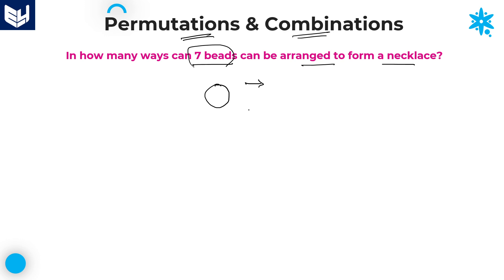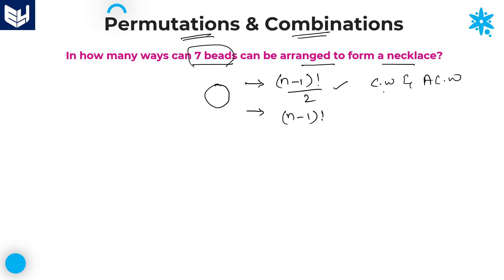In circular arrangement, we have two formulas. One is related to necklace and garland — that is (n minus 1) factorial divided by 2. Whereas for arranging persons or members, the formula is (n minus 1) factorial. The division by 2 applies when there is no difference between clockwise and anti-clockwise direction. If there is a difference between clockwise and anti-clockwise direction, then we use (n minus 1) factorial.